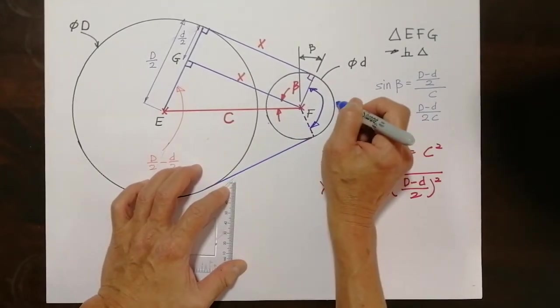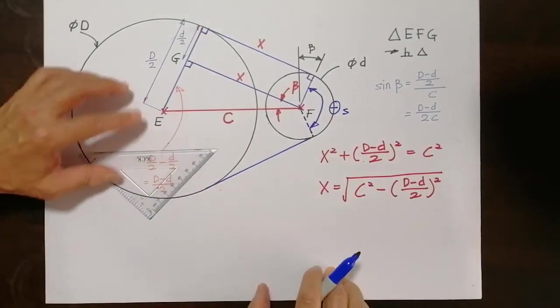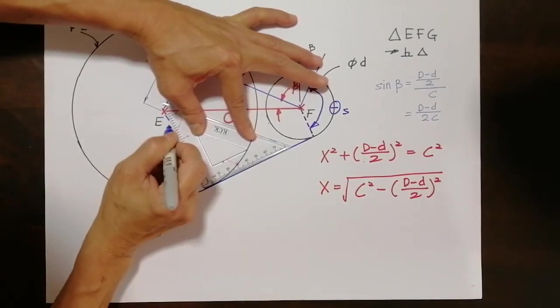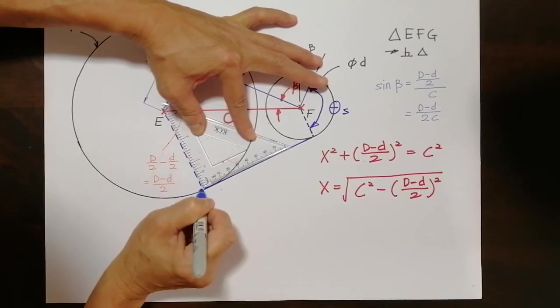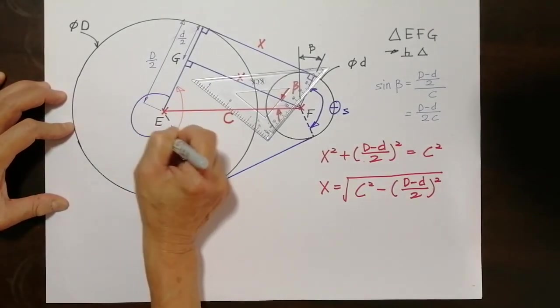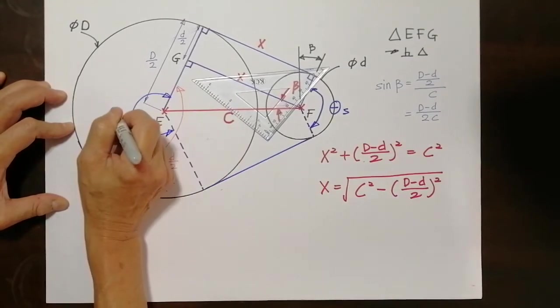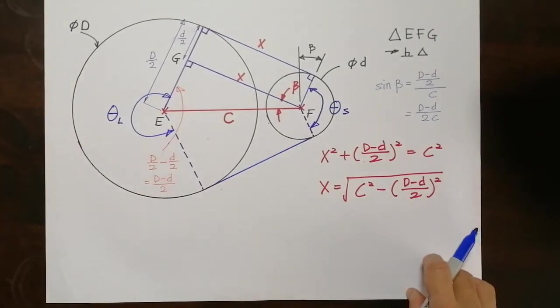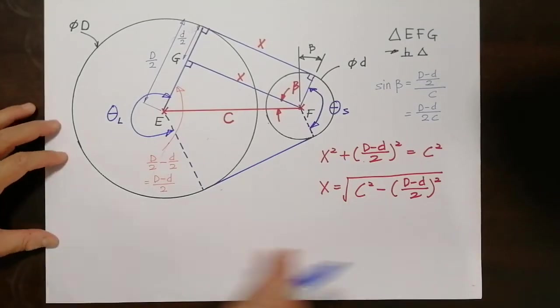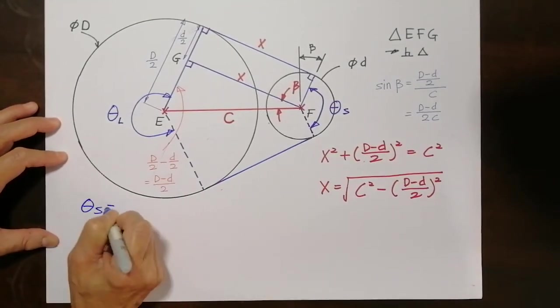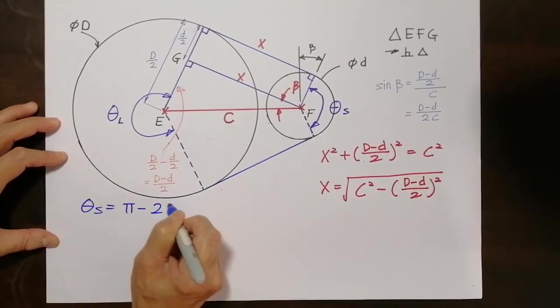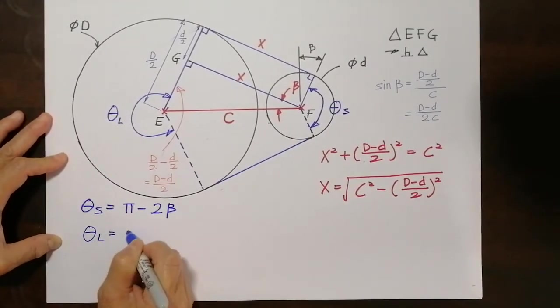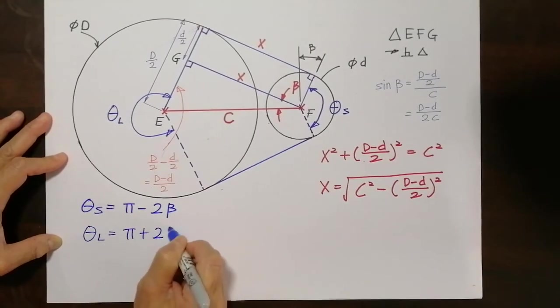So let's define this angle as theta S. Similarly on this side, if this is theta S, then I would also want to draw this one. And call this angle, if that is S, then this will be theta L. L stands for large pulley and S stands for the small pulley. And now I can safely say that theta S is equal to π minus 2β. And theta L will be π plus 2β.